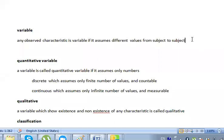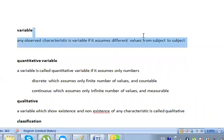What is the variable? Any observed characteristic is variable if it assumes different values from subject to subject.